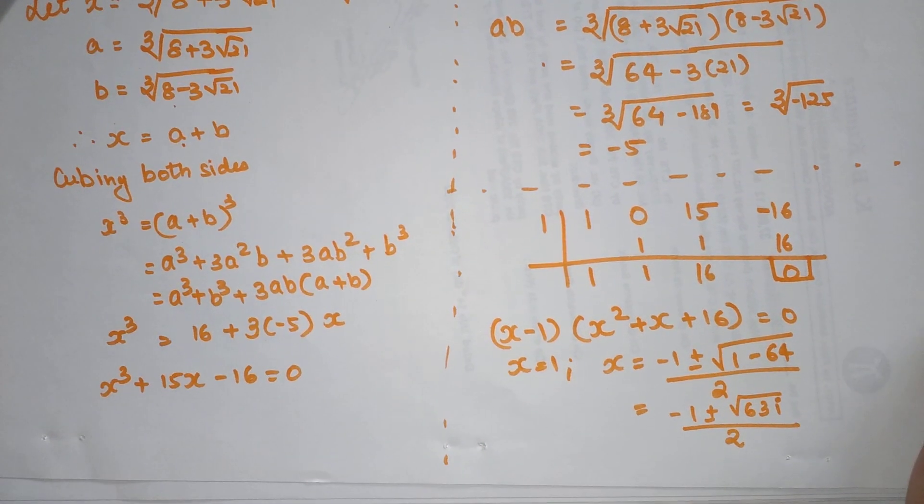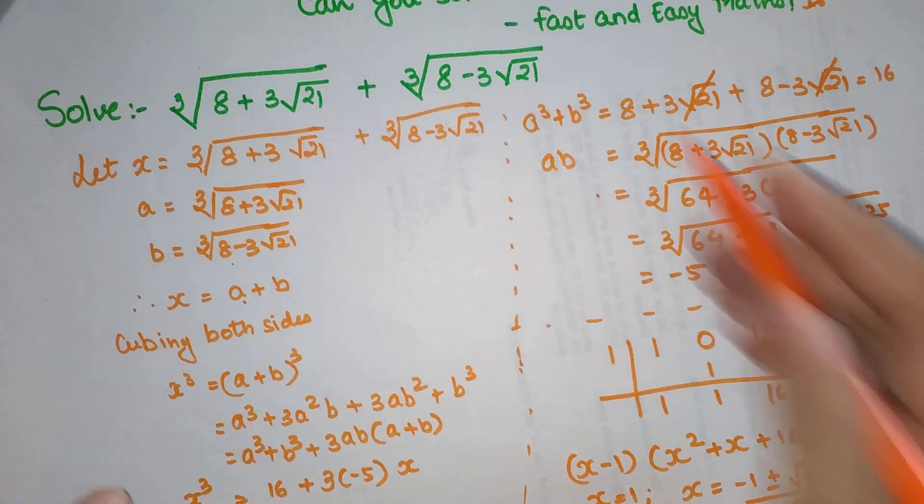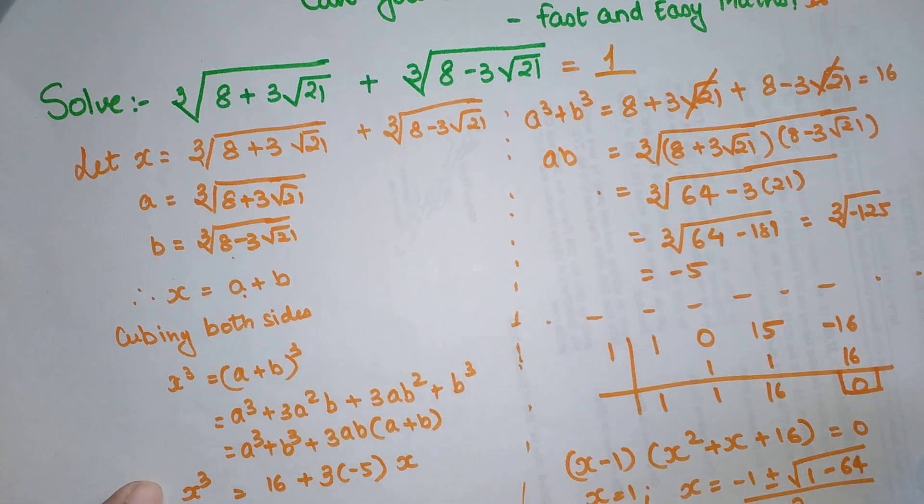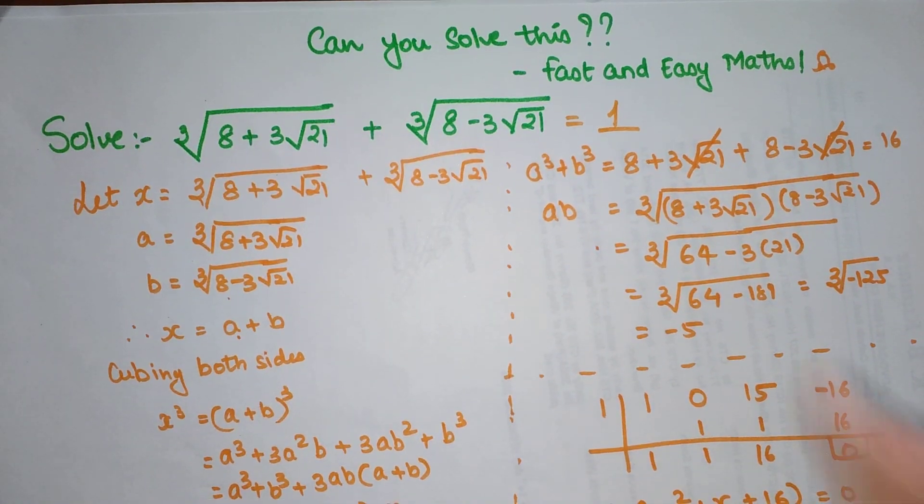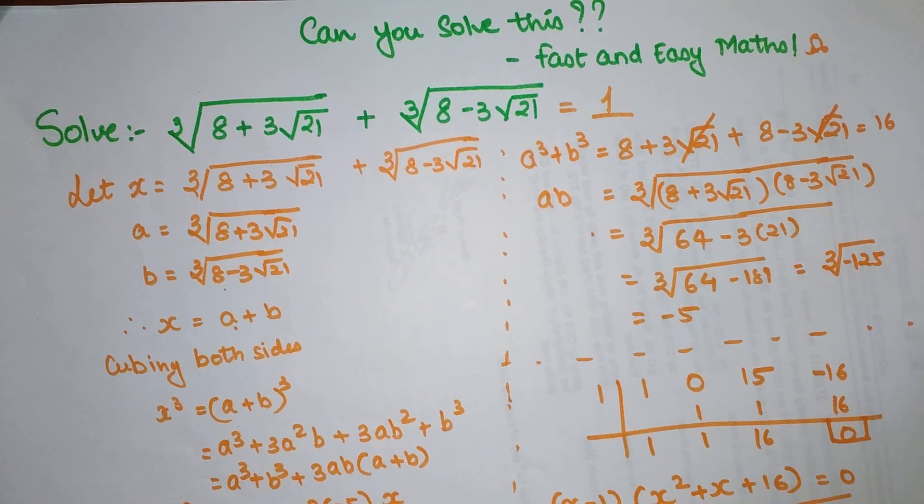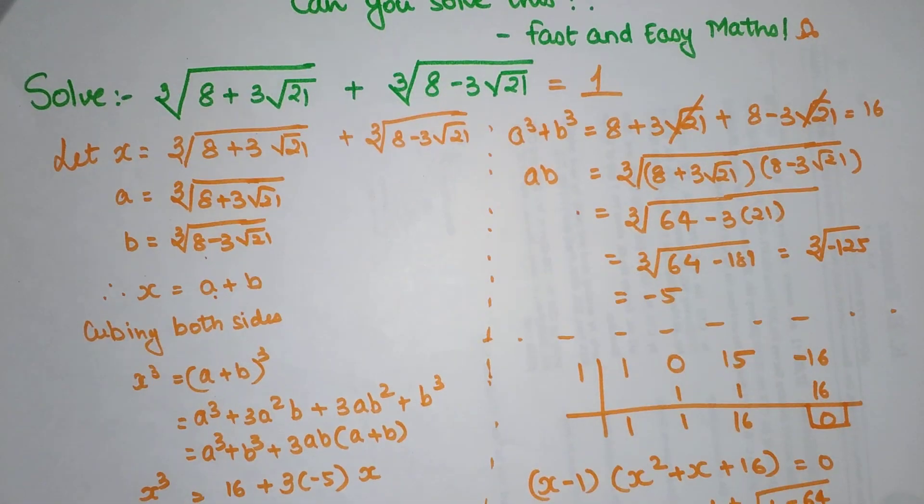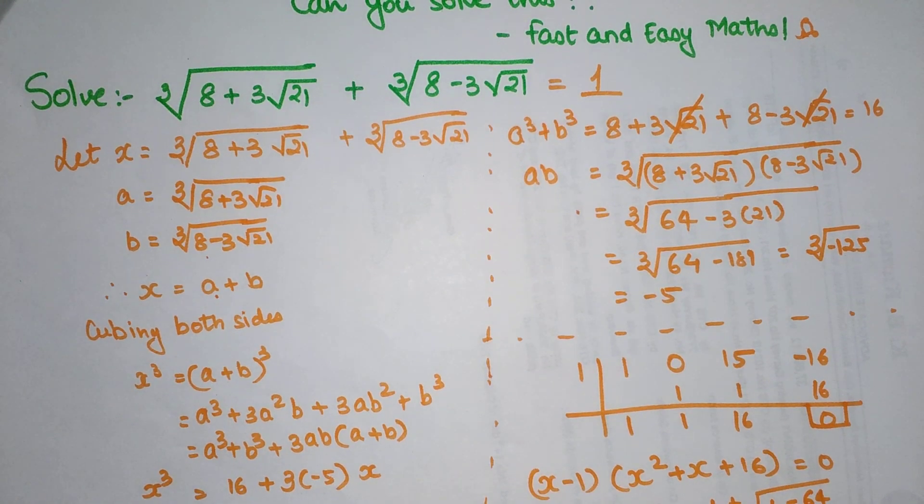We are getting three values, but out of that the two values are complex, so we can directly say that this particular value will be just 1. Surprising, right? We never thought that entire equation will now come out to be 1, but that's how this entire sum was solved. That's it for this video. I will see you in the next one. See ya!